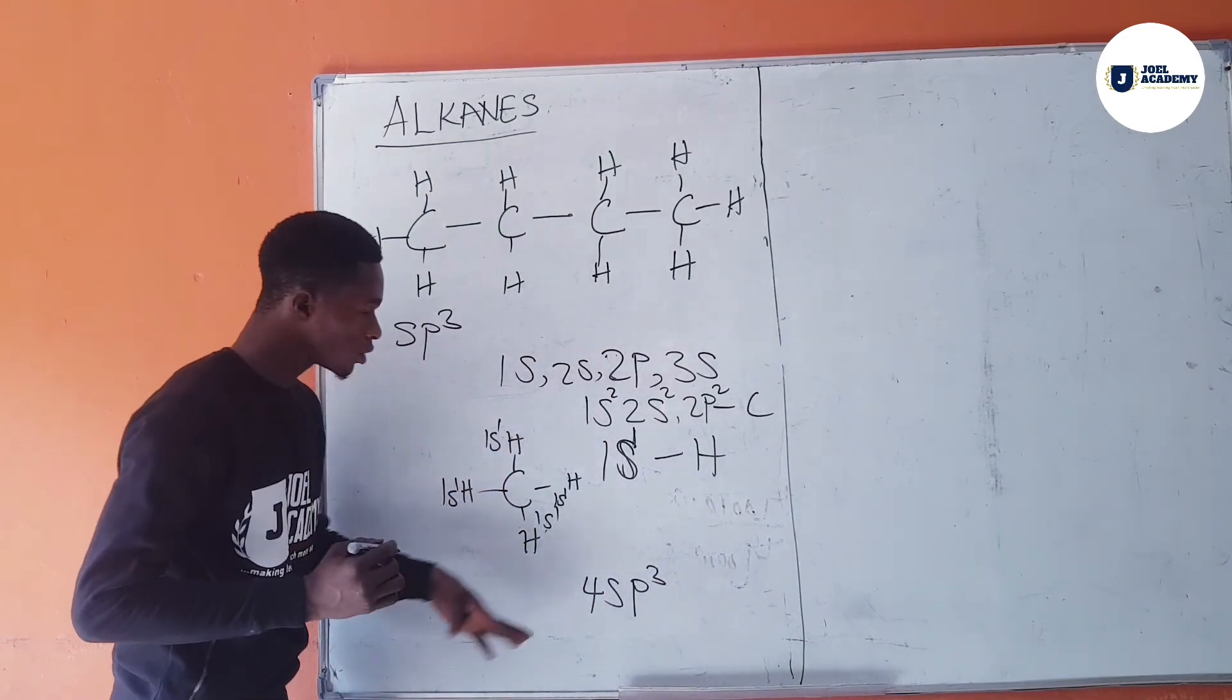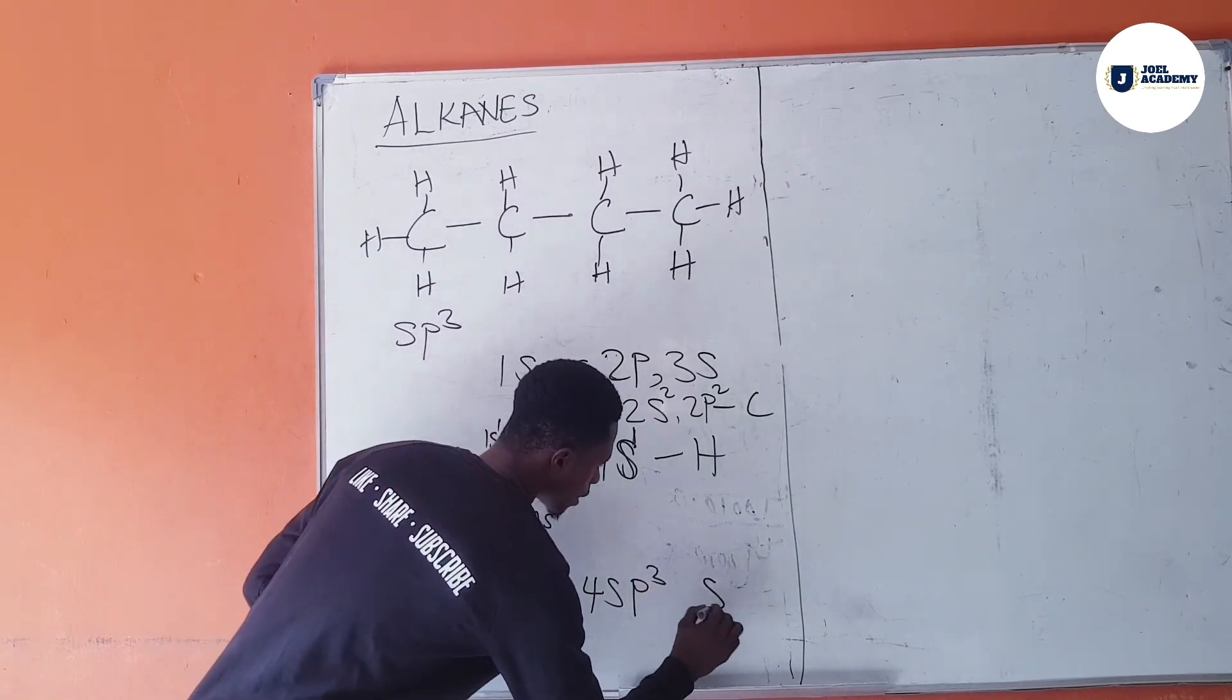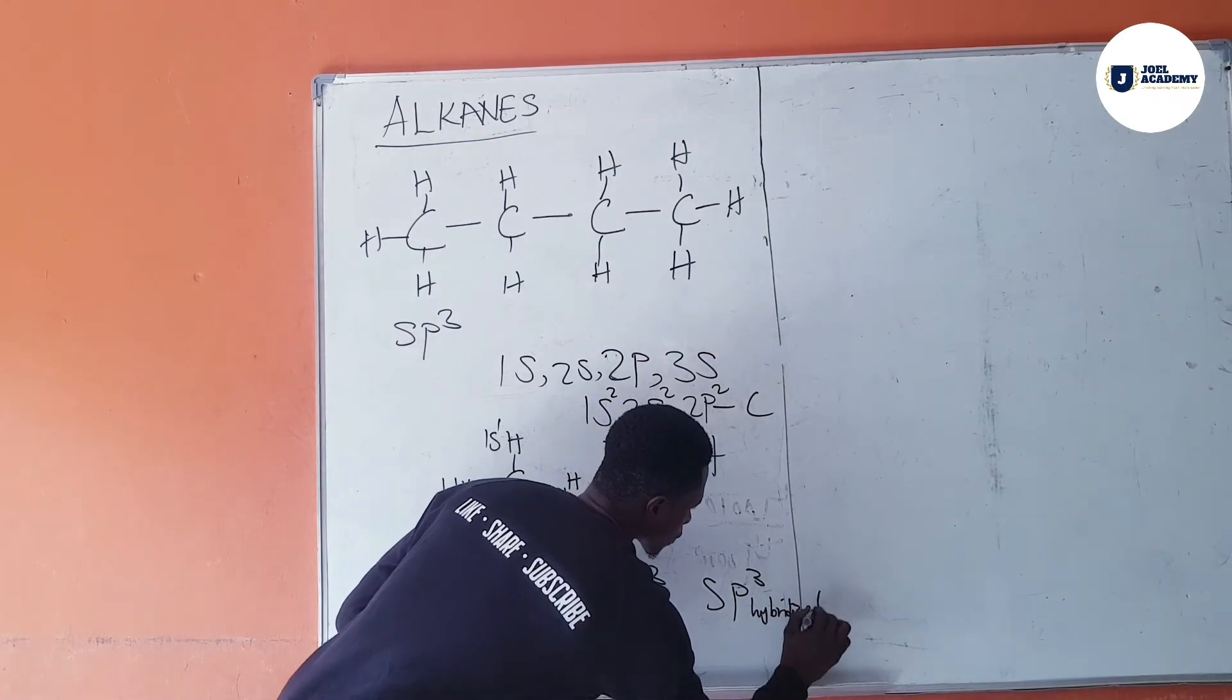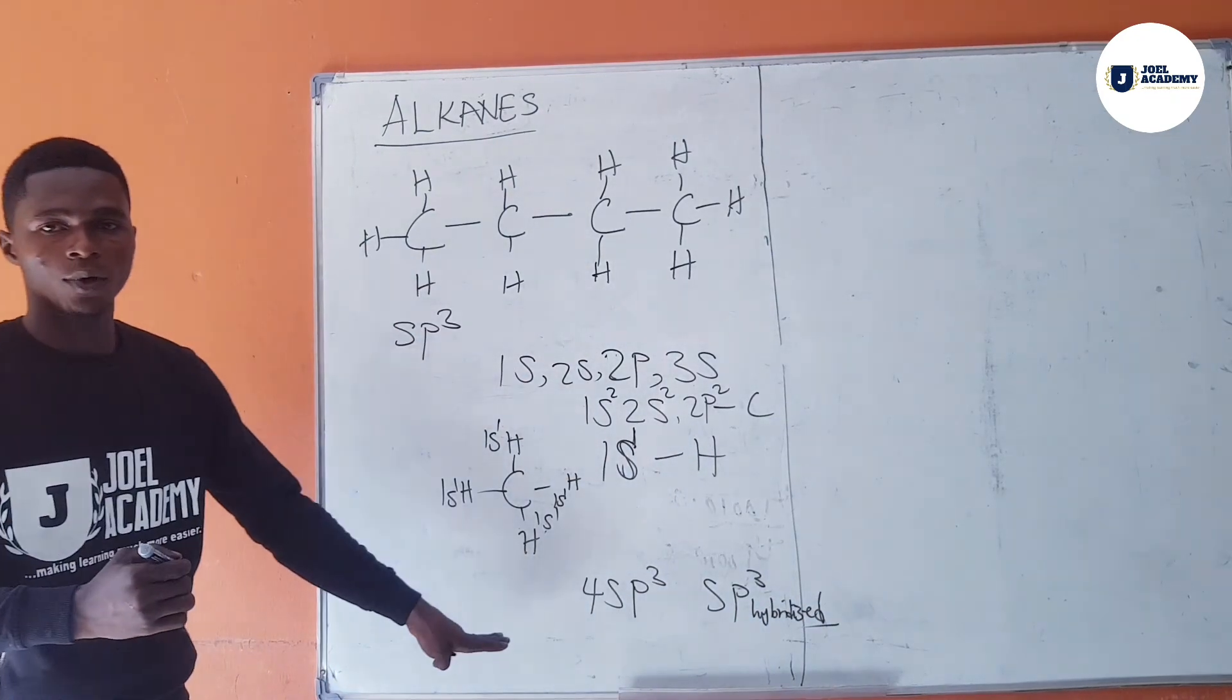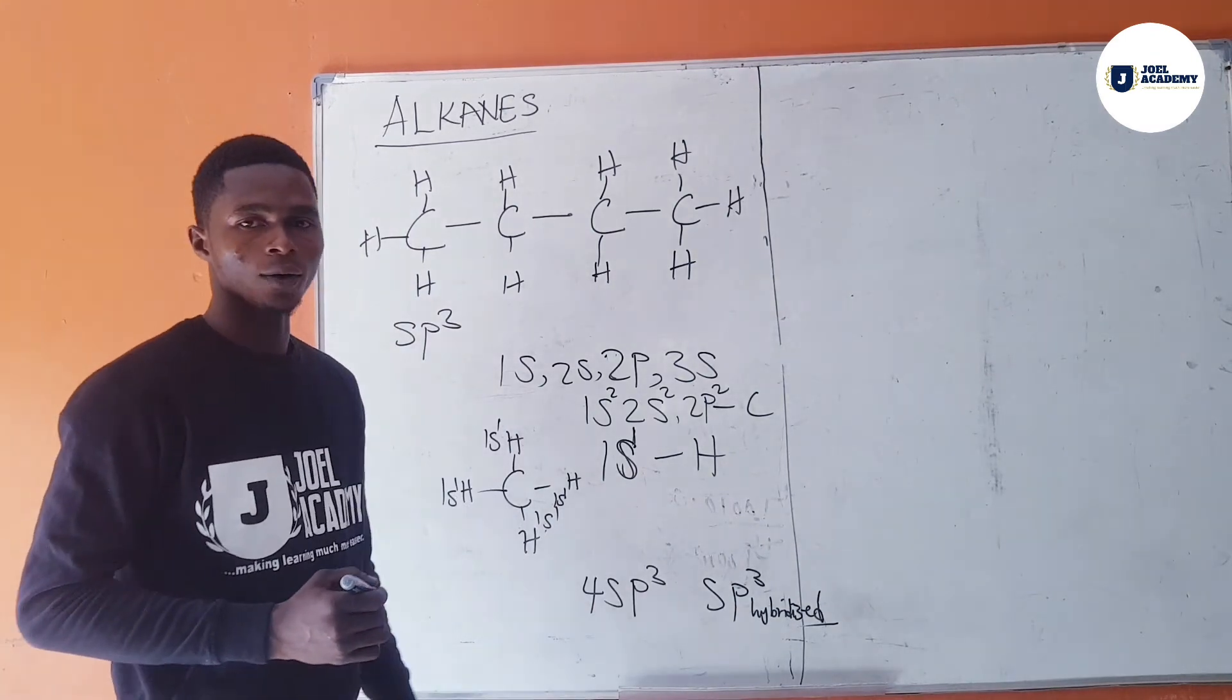So, in referring to this, now we say, they are called sp3 hybridized. That is how we come about the hybridization of the sp3 in alkanes.